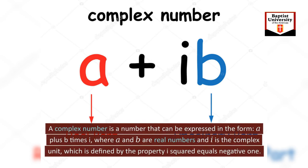A complex number is a number that can be expressed in the form A plus B times I, where A and B are real numbers and I is the complex unit, which is defined by the property I squared equals negative 1.